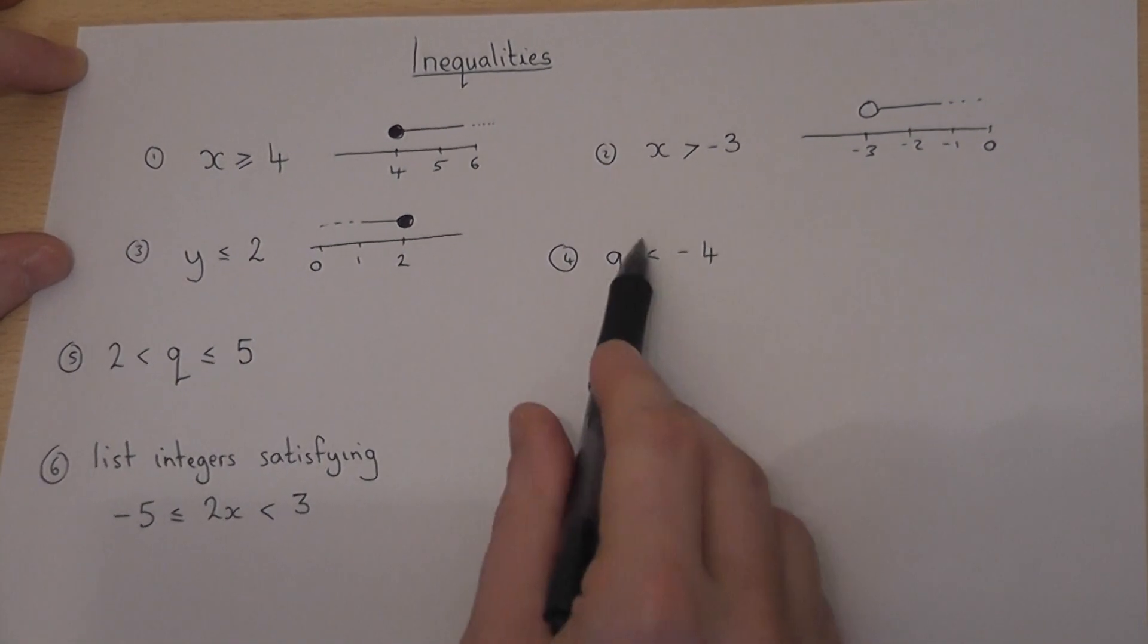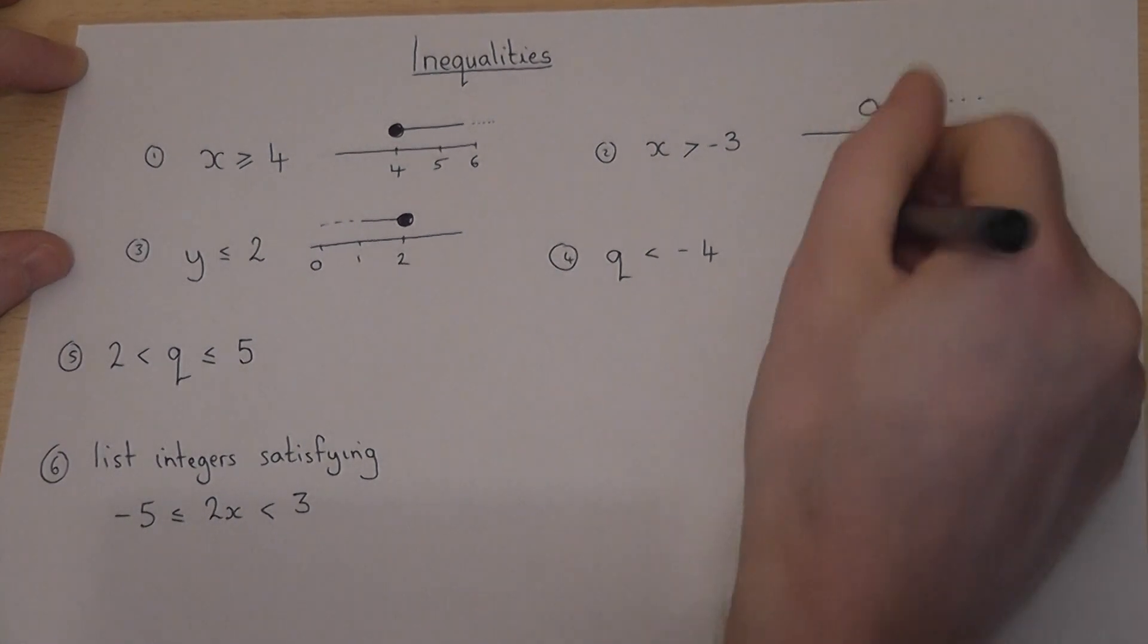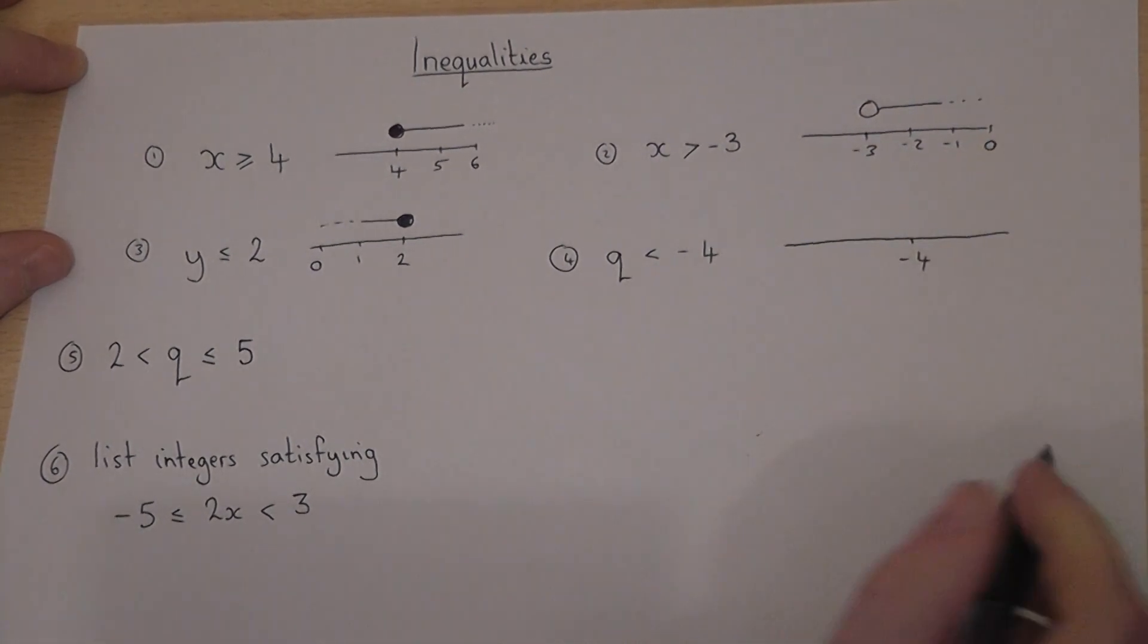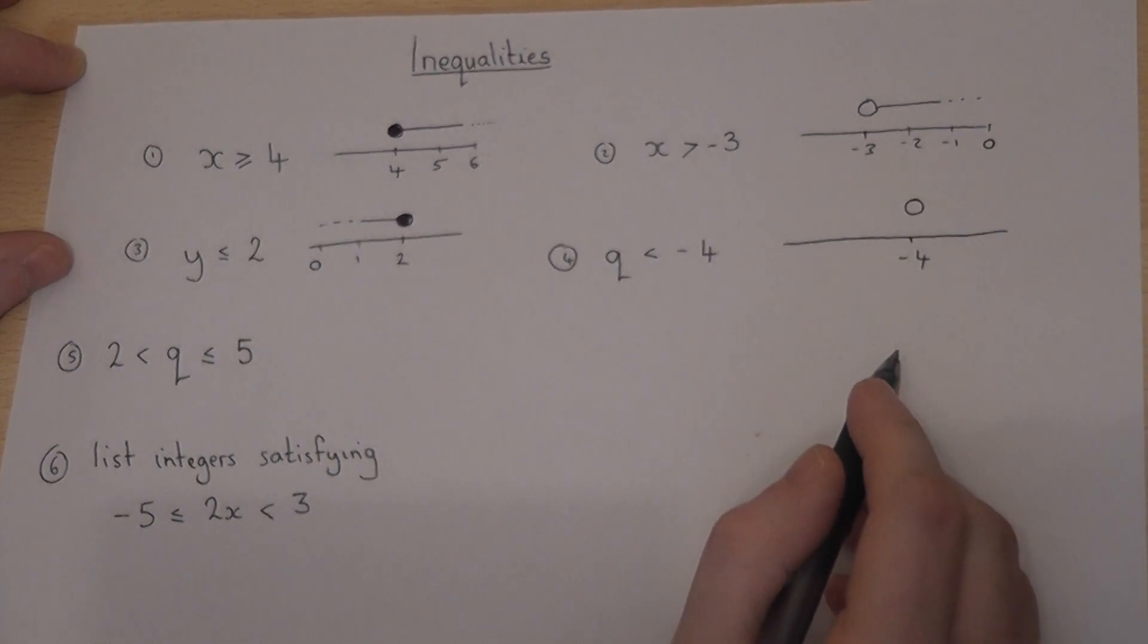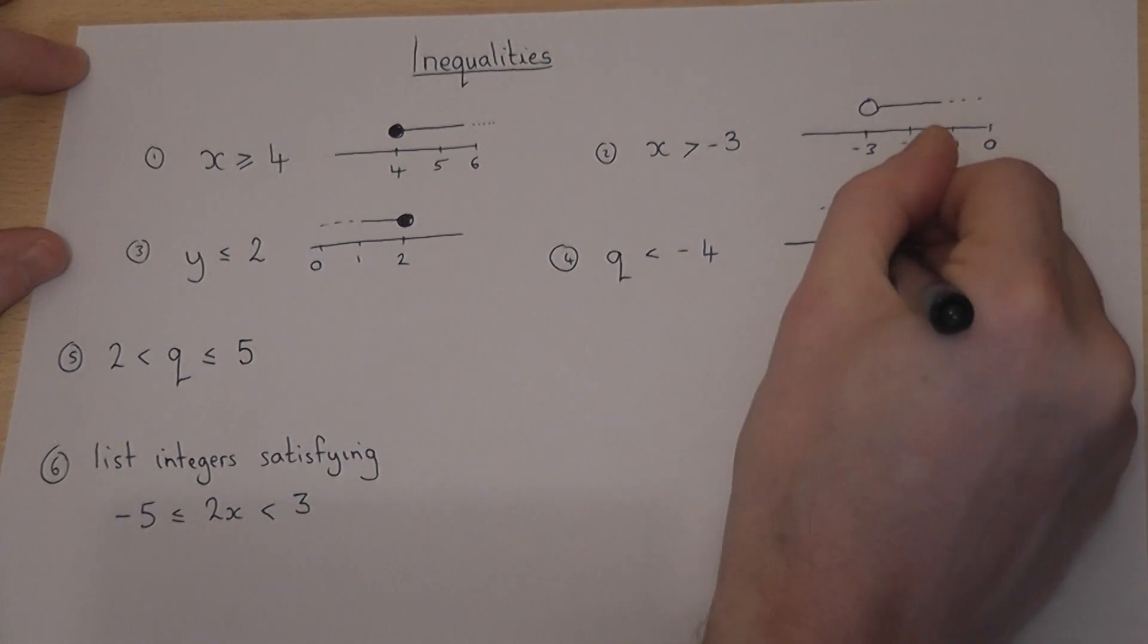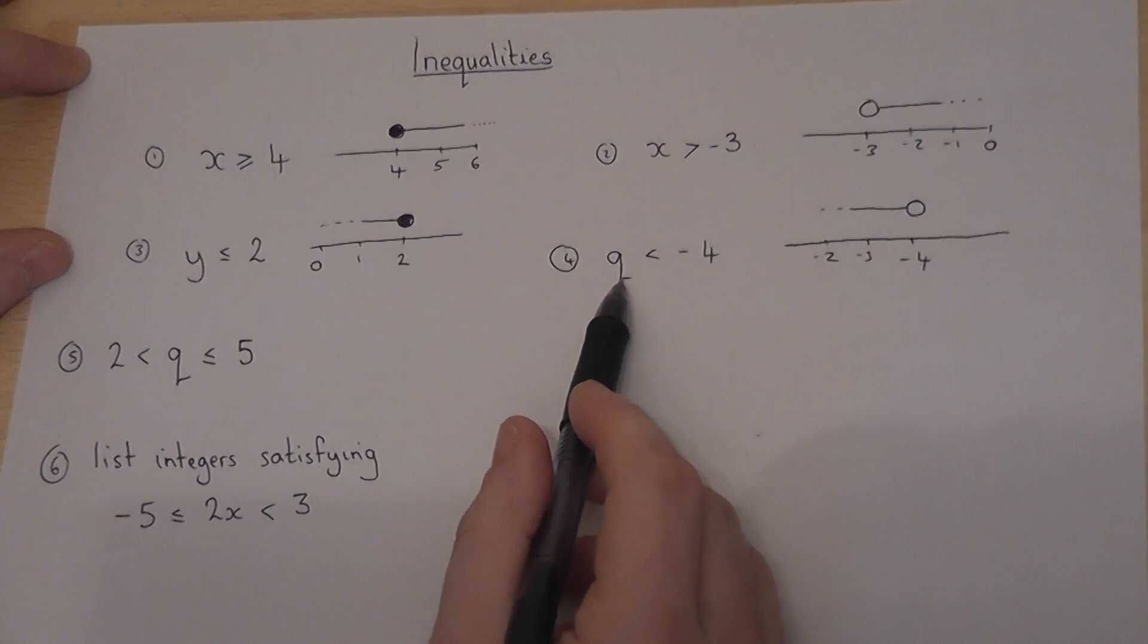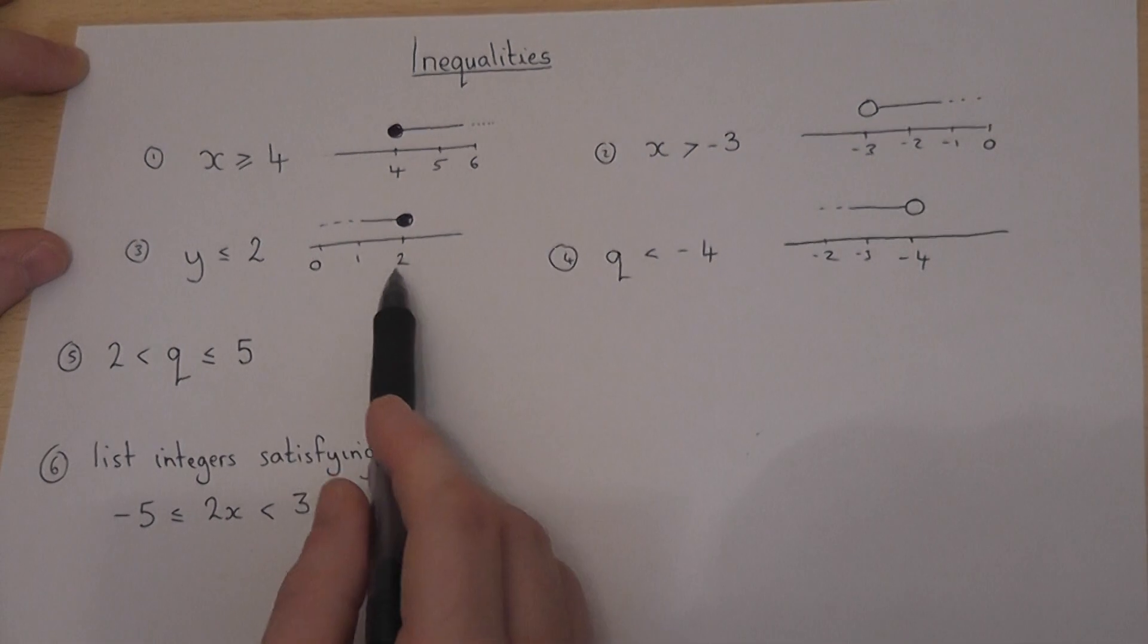So 4, we're still less than, but we're now less than but not including minus 4. So on my number line, I could put a minus 4, it doesn't matter where. I don't include minus 4, so I use the open circle. I'm less than, so I go to the left, and I'll just put some numbers on to indicate what's going on. So q can be any number less than but not including minus 4. So they're the four main examples.